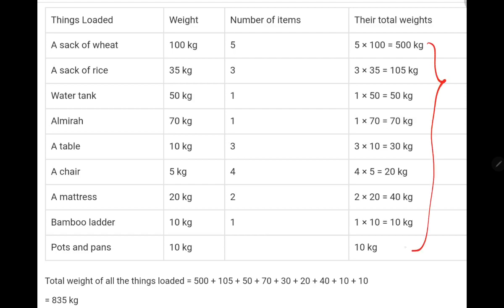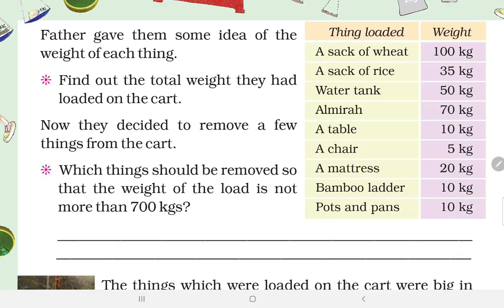So this is all the weight. Now add them. Total weight of all the things: 500 plus 105 plus 50, 70. We will add here, and after that 500, 605 plus 50, 655 plus 70 plus 30, 735, 20, 40, 10, 10. Add, and you will get 835 kg. This is your final answer, the total weight is 835 kg.